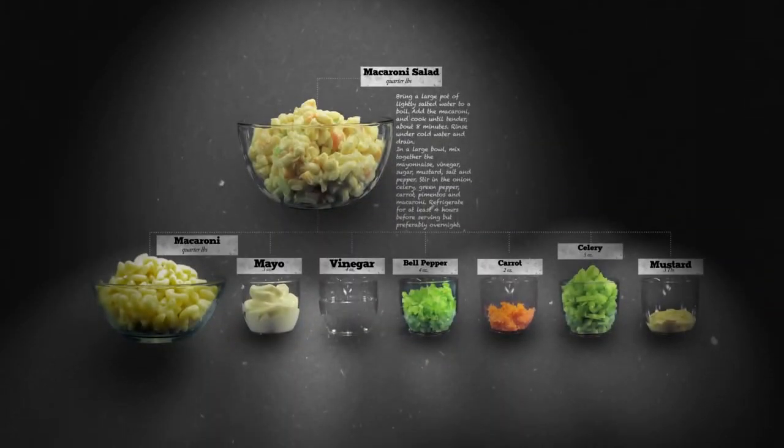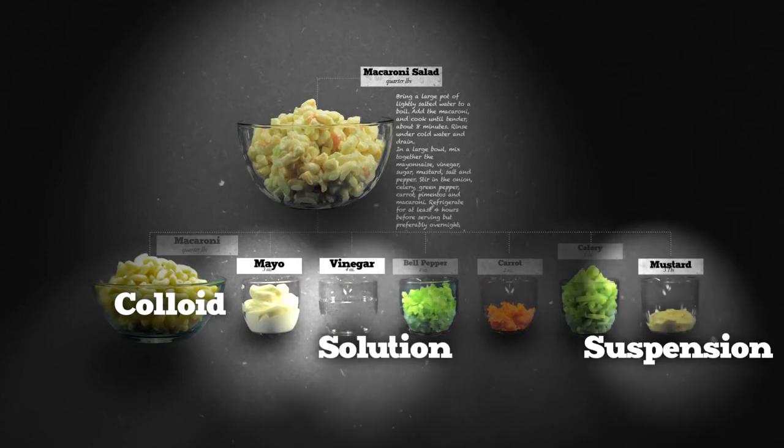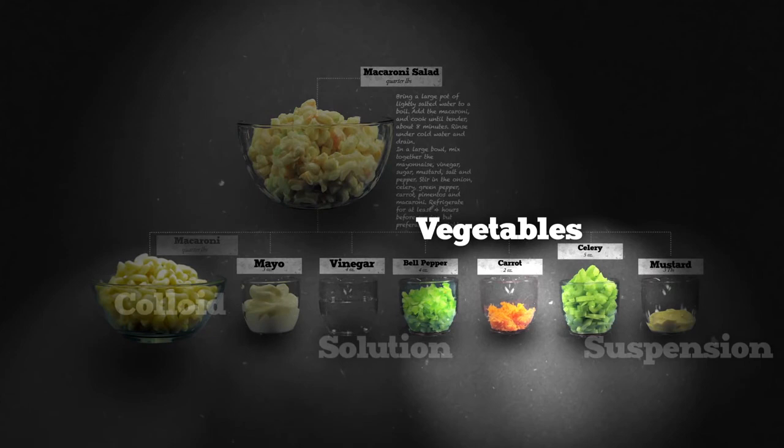So let's get back to macaroni salad. You've got colloids like mayo, suspensions like mustard, and solutions like vinegar. But you've also got celery, shallots, and all other vegetable chunks that are also part of the salad.